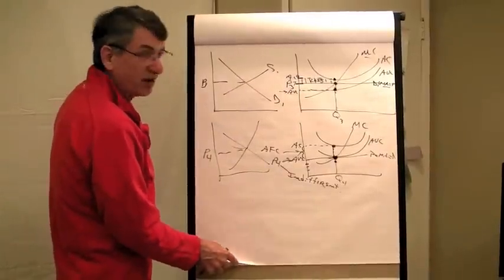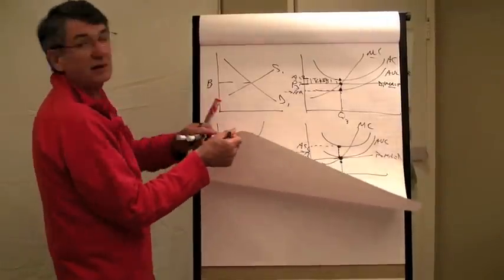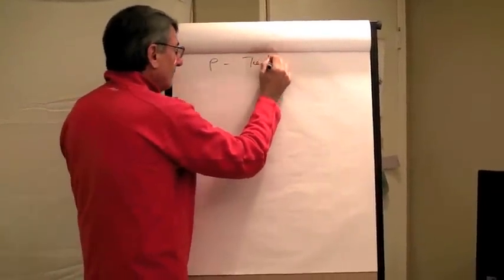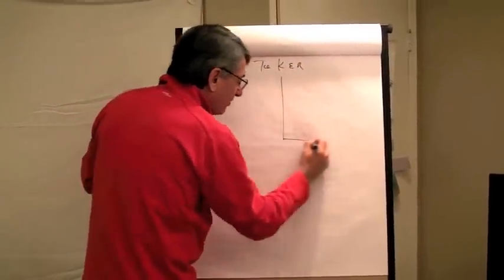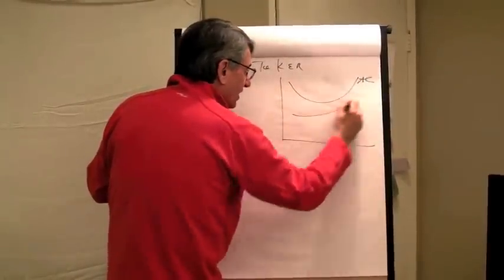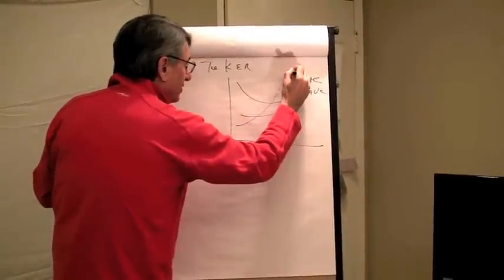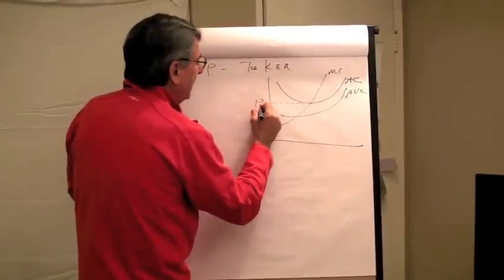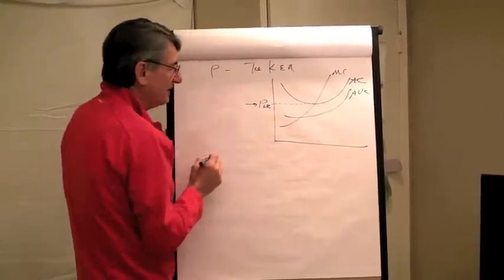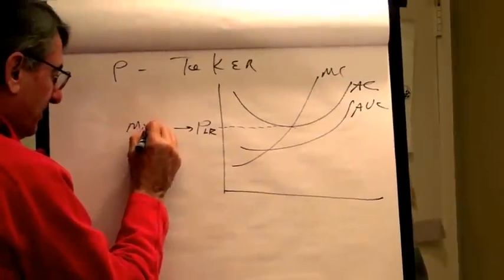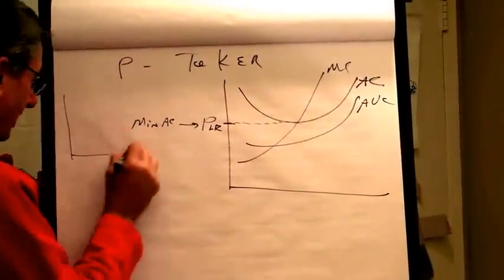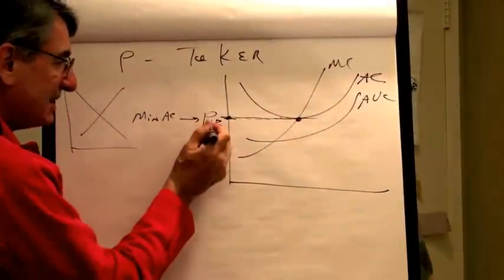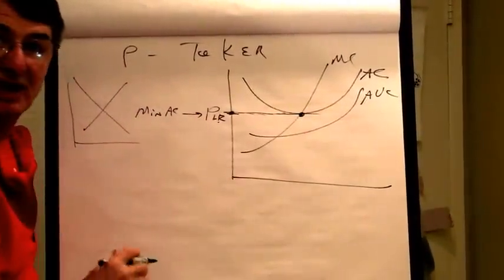With a price taker, these are the firm's cost curves: average cost, average variable cost, and marginal cost. At price PLR — the long-run price, the point of minimum average cost — if the price coming out of the market is exactly that, then the firm would produce that quantity. Since the price is exactly equal to average cost: zero profit.